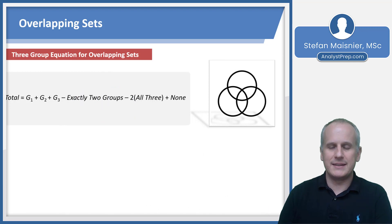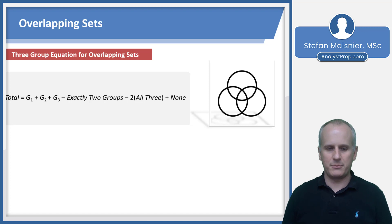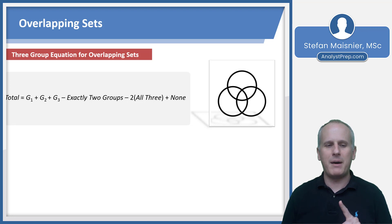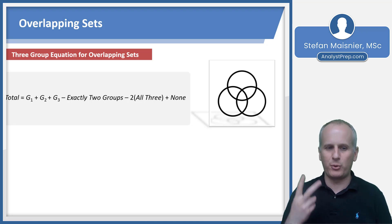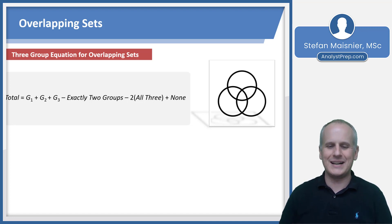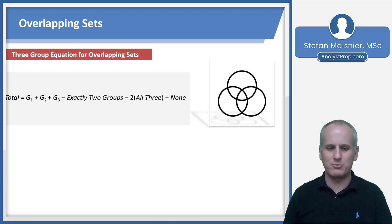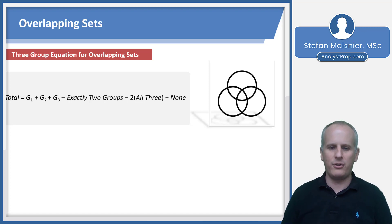The most complex that the Executive Assessment is going to get when it comes to overlapping sets is three groups. Here is our three-group equation for overlapping sets, extrapolating the logic from before. The total equals group 1 plus group 2 plus group 3, minus those that are in exactly two groups — because I've counted those people twice and want to count them only once — and then subtract 2 times all three groups, because if somebody's in all three groups, I've counted them three times and only want to count them once.